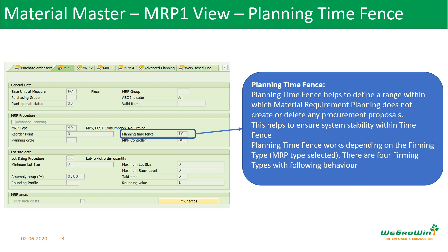Now let us discuss the planning time fence. The planning time fence helps to define a range within which material requirements planning should not create or delete any procurement proposal. Why should we do it? For example, if there is a PR generated or a planned order generated and MRP is running on a daily basis, the system will keep on producing new planned orders, new PRs, or it may amend the quantity based on the situation as of the date.